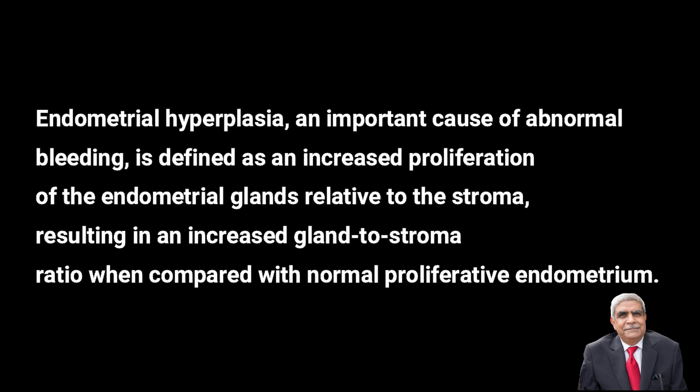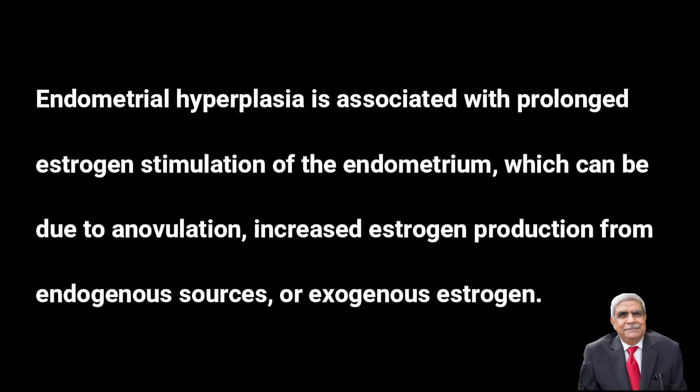The endometrial glands are tubular in shape, but in endometrial hyperplasia the increase is in favor of glandular proliferation compared to stroma — the number of glands is in favor over stromal proliferation. Endometrial hyperplasia is associated with prolonged estrogen stimulation of the endometrium, which may be due to exogenous or endogenous sources, and is associated with anovulatory cycles.